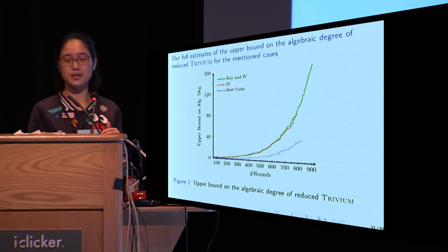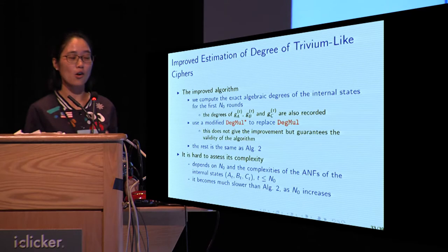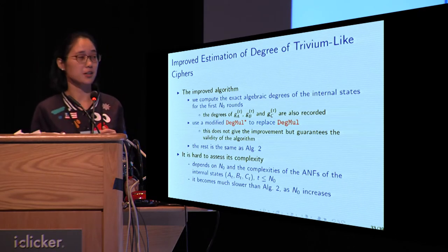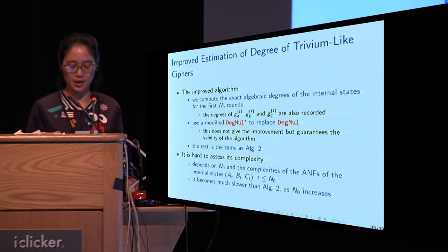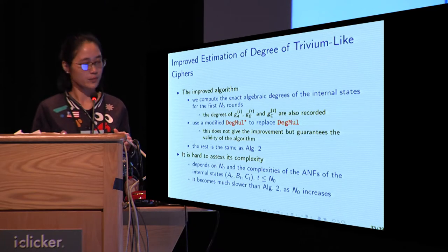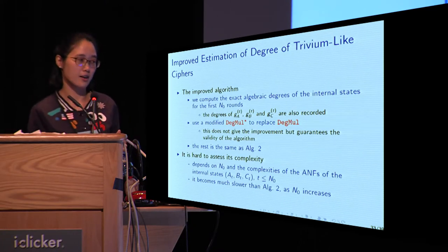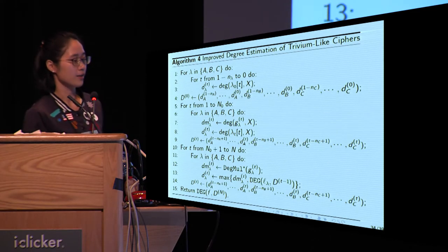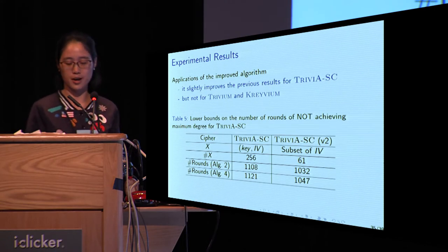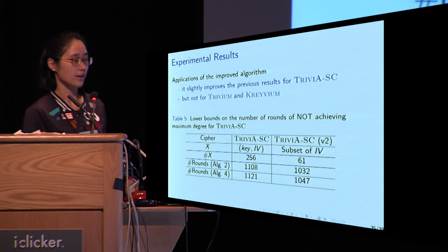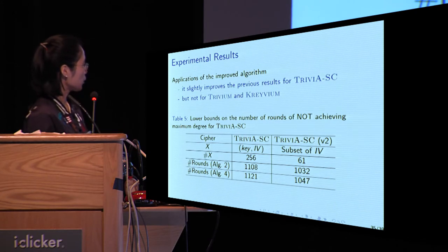This figure shows the estimated algebraic degree for Trivium under the three mentioned cases. To improve our algorithm, we made two adaptations: first, we computed the exact algebraic degree of the internal state for the first N_0 rounds; second, we used a modified DIGMAR* to replace the original DIGMAR. The rest remains the same as Algorithm 2, though it becomes harder to estimate the time complexity. The adapted algorithm is described in Algorithm 4. Applications of the improved algorithm bring new bounds for Trivium SC, and better bounds are obtained as shown in the table.